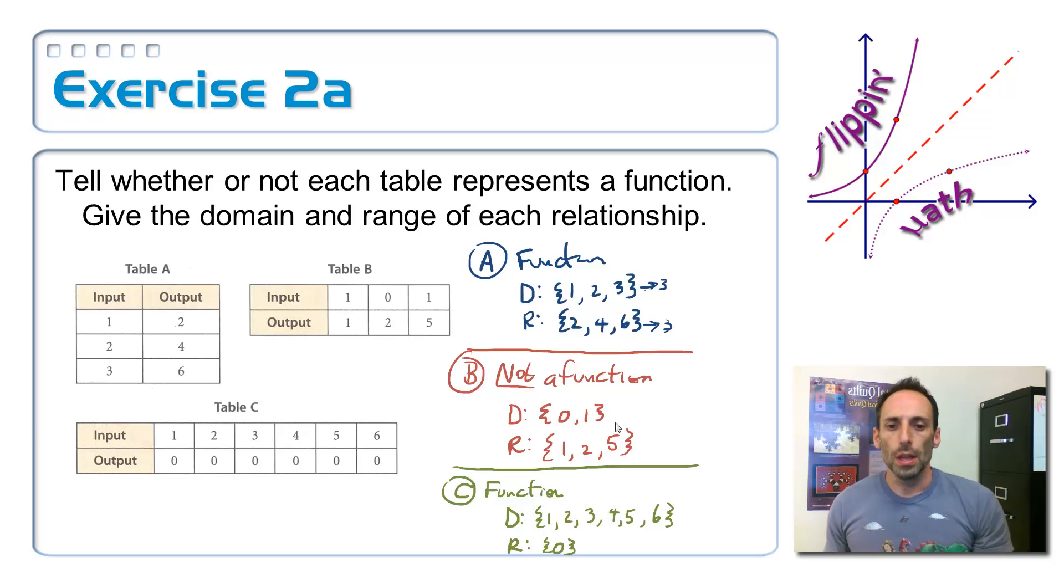Let's look at table B. On table B, the cardinality is two, and in the range, there are three things in there. And on table C, there were six things in the domain, but only one thing in the range. Is there anything those numbers have to do with each other?